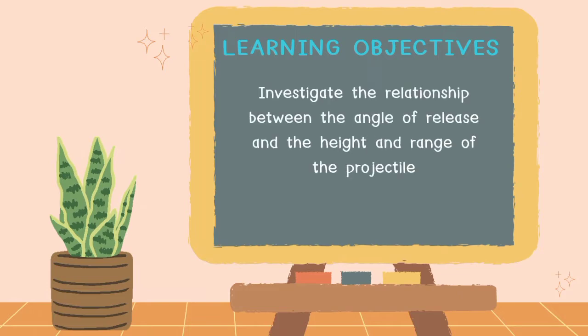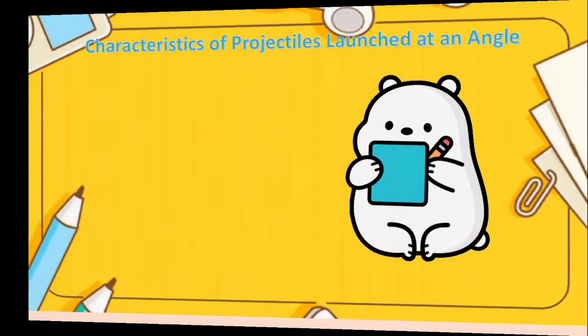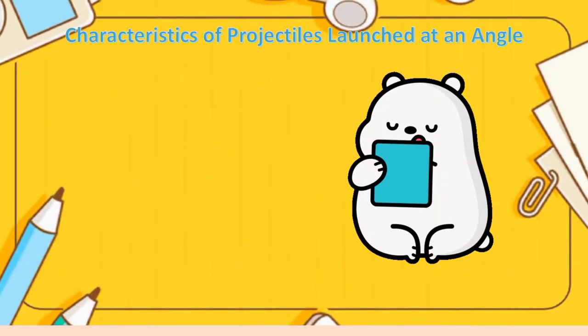Let us find out the learning objectives. This time we are going to investigate the relationship between the angle of release and the height and range of the projectile. We will also identify the different characteristics of a projectile launched at an angle.